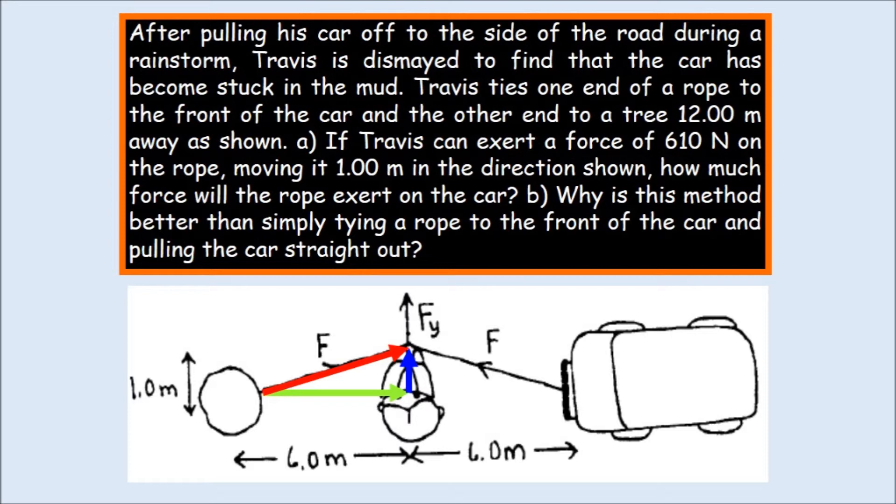If you can exert 610 Newtons on the rope, then the question will be, well, okay, if that's all true, then we need to find the angle between the red and the chartreuse, or red and lime green, vectors.